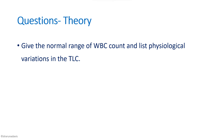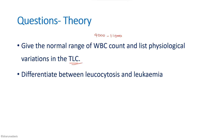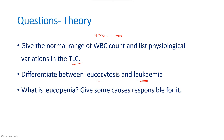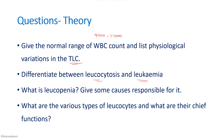Other questions that can be asked from the theory part include: what is the normal range of WBC count? It is 4,000 to 11,000 per mm³ of blood. What are the physiological variations in the total leukocyte count? You should be ready with the causes of leukocytosis as well as leukopenia. What is the difference between leukocytosis and leukemia? Leukemia is a malignant condition and the cell count in leukemia will be in millions, whereas in leukocytosis the cell count will only be in tens of thousands. What is leukopenia and its causes? And what are the various types of leukocytes and their chief functions? These are some questions that can be asked for the theory part.